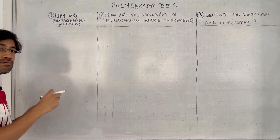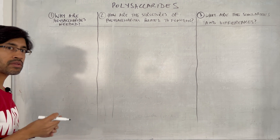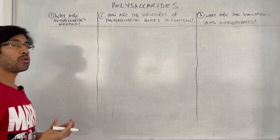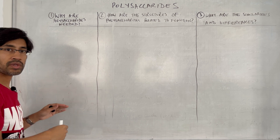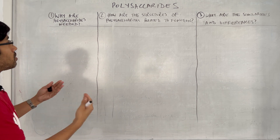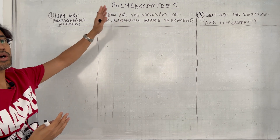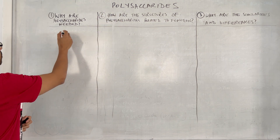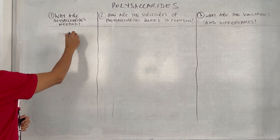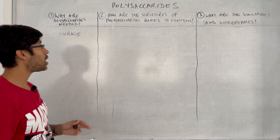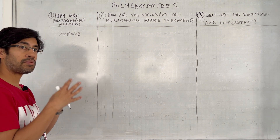In the previous video we looked at monosaccharides and disaccharides. If monosaccharides and disaccharides are doing such a good job, why do we need polysaccharides? Why invest the energy it takes to put these monosaccharides and disaccharides together? What added advantage is there to having structures called polysaccharides? Well, polysaccharides are great for storing monosaccharides.